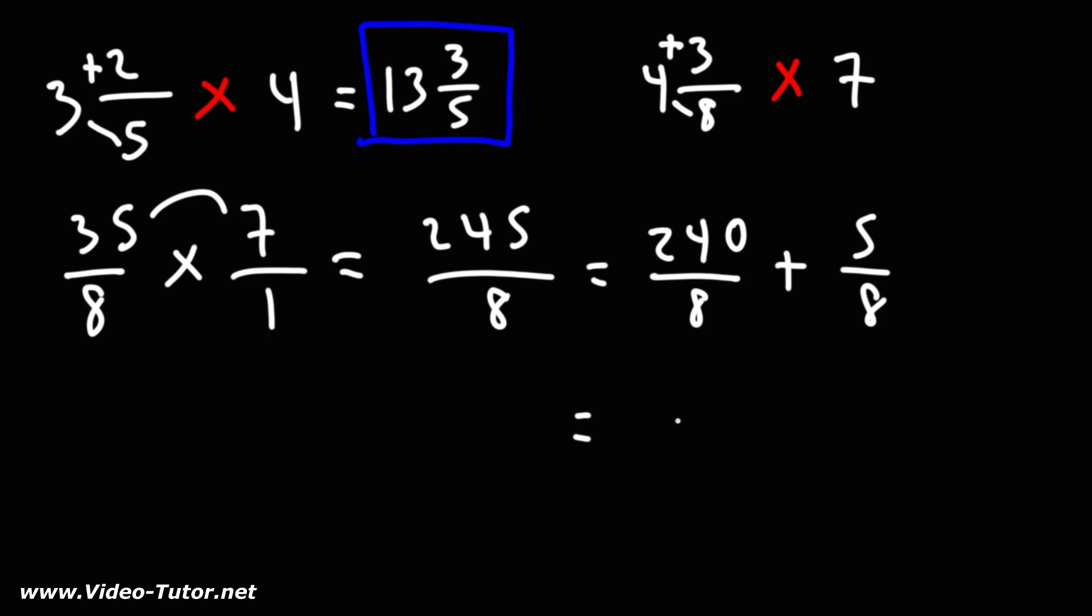Now what's 240 divided by 8? 24 divided by 8 is 3, so when you add the 0, 240 divided by 8 is going to be 30. So we have 30 plus 5 eighths, that means the answer is 30 and 5 eighths.